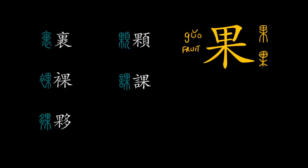This is the seal script version of it and this is the oracle bone script version of it. Just to date them: the regular script is roughly 100 AD and onwards, the seal script is roughly 200 BC, and the oracle bone script is 200 BC and earlier — let's say 500 BC and before.